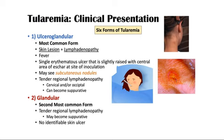In ulceroglandular tularemia, glands are involved and the presentation may include subcutaneous nodules, tender regional lymphadenopathy — cervical or occipital — and it can become suppurative. The glandular form is the second most common clinical presentation. It features tender regional lymphadenopathy that may be suppurative, but the skin ulcer is not identifiable, unlike in ulceroglandular where the skin ulcer is identifiable.